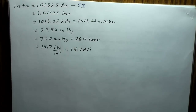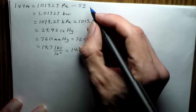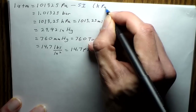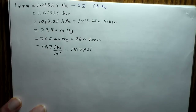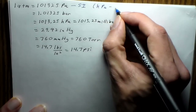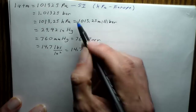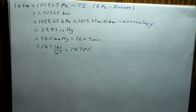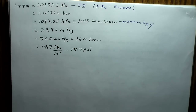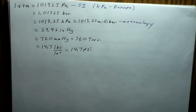Bars and millibars are commonly used in meteorology. If you watch weather maps, you'll see layers of the atmosphere referred to as 850 millibars, 200 millibars, and so on. Hurricane pressure is often given in millibars. A millibar is also equivalent to a hectopascal.